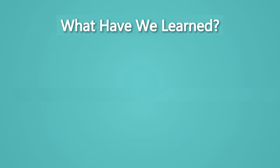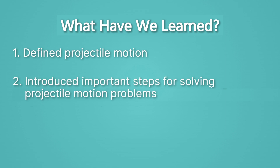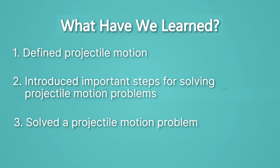What have we learned? We've defined projectile motion as the motion of something in the air launched with some initial velocity, and we track its motion over time. We've introduced the important steps for solving projectile motion problems and used them to solve our first problem. You need more practice, so if you still feel a little uncomfortable, that's totally normal. In our next lesson, we'll continue solving projectile motion problems.